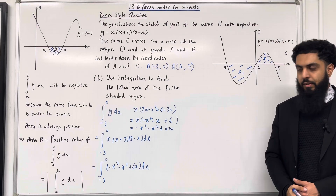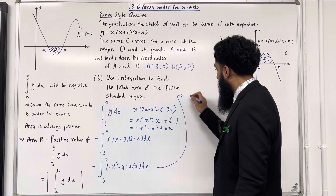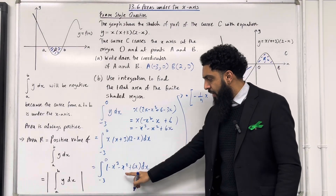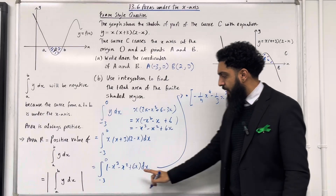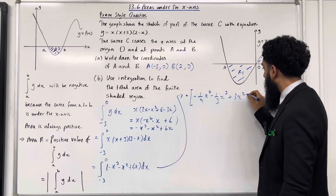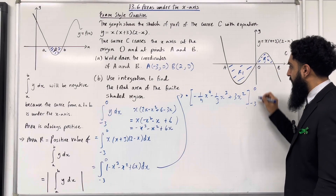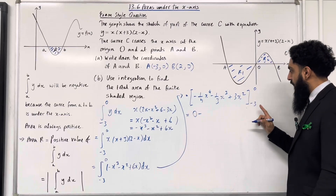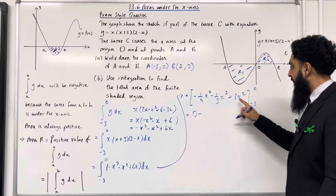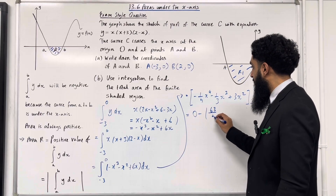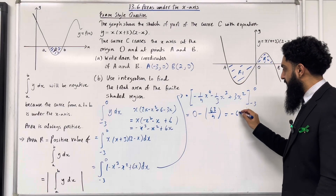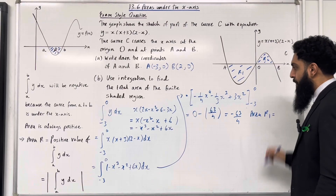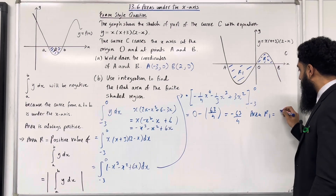Applying term-by-term integration gives: open square bracket, minus one quarter x to the power 4, minus one third x to the power 3, plus 3x squared, close square bracket, with limits from minus 3 to 0. Substituting the upper limit x equals 0 gives 0. Substituting the lower limit x equals minus 3 gives 63 over 4. So 0 minus 63 over 4 equals minus 63 over 4. Area R1 has to be the positive value of this integral, so area R1 equals 63 over 4.